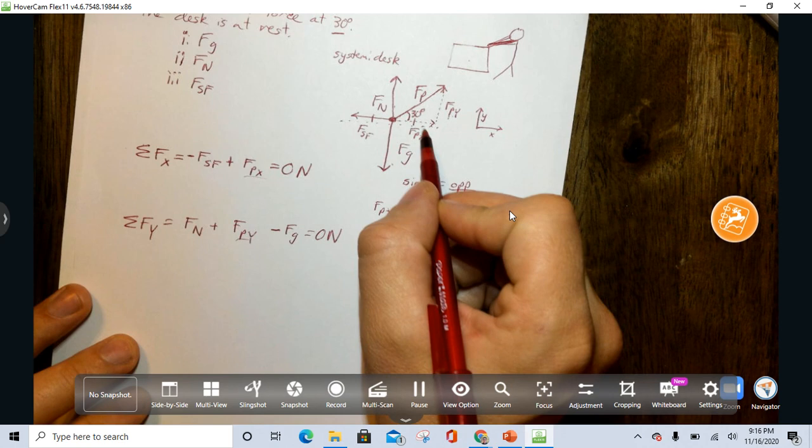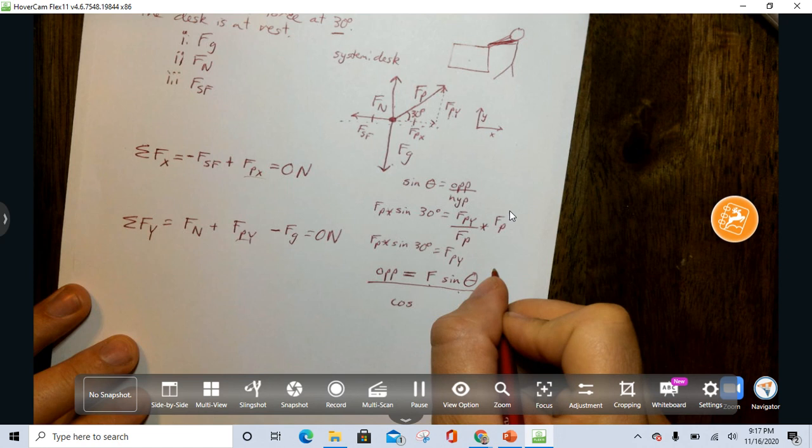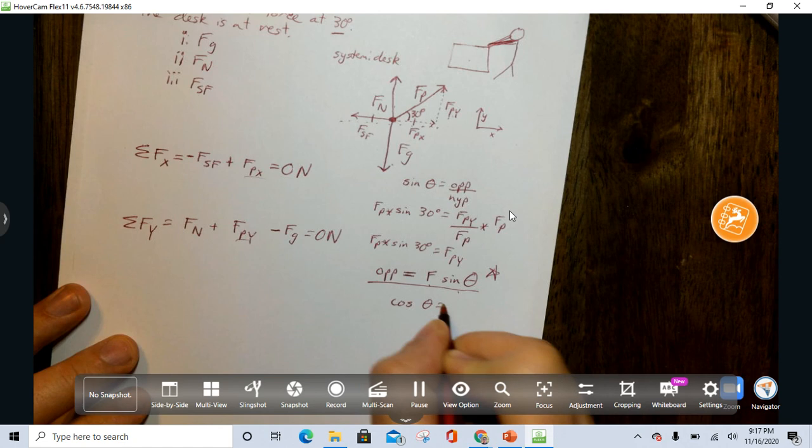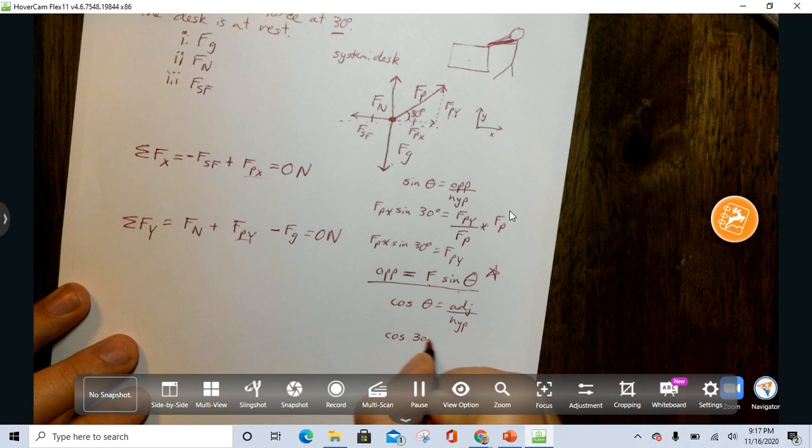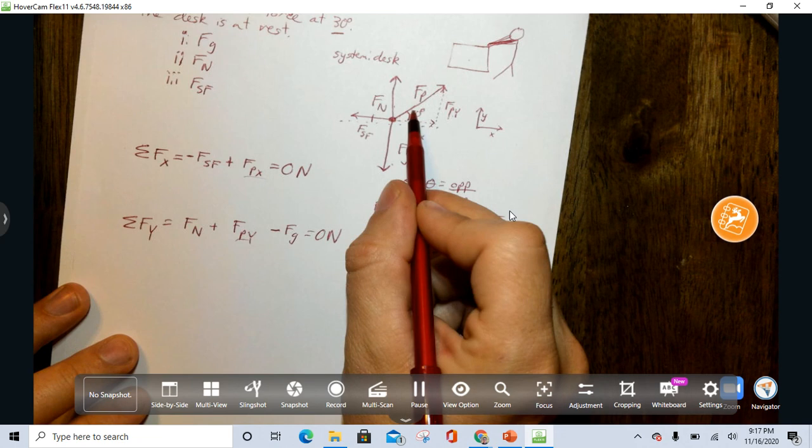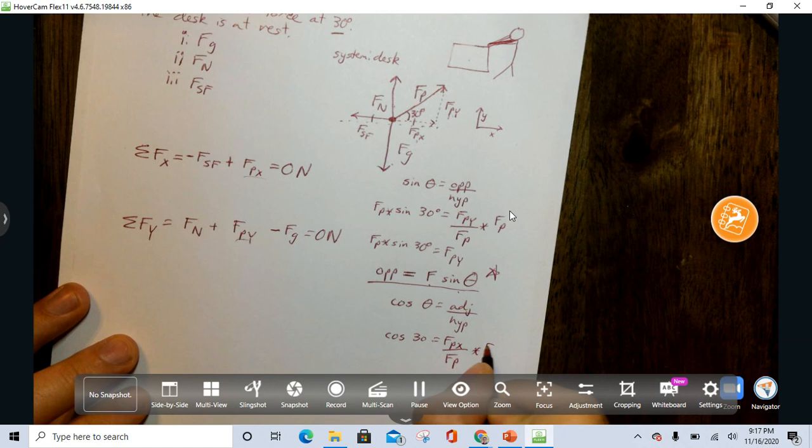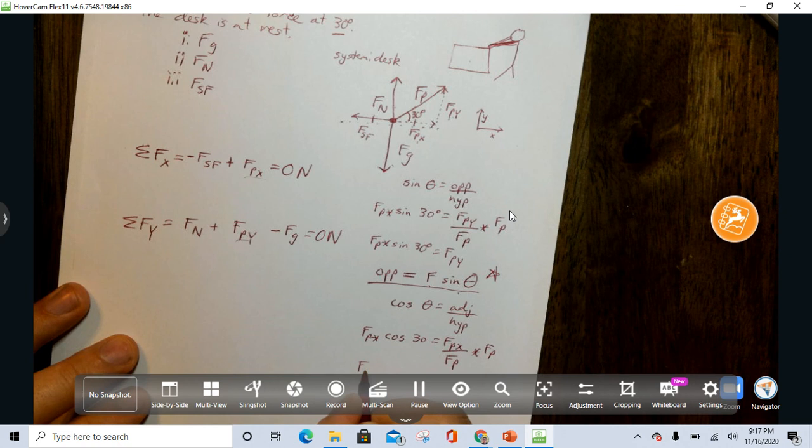Now, if we want to talk about FPX, cosine of theta is adjacent side over the hypotenuse. So, cosine of 30 equals FPX, which is the adjacent side to the angle, over FP. Same thing. We're going to multiply both sides by FP. We get FP cosine theta, or 30, equals FPX.